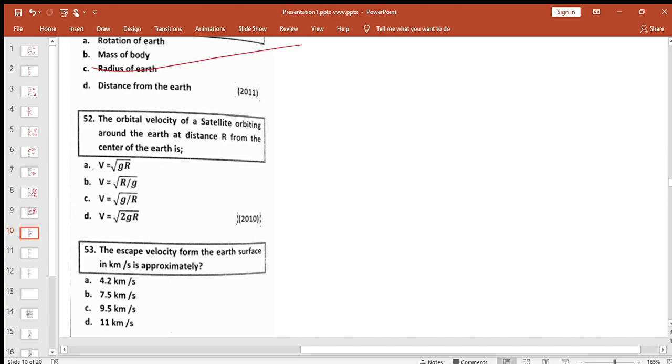The orbital velocity of a satellite orbiting around the earth. The escape velocity from the earth surface in kilometers per second is approximately equal to 11 kilometers per second.